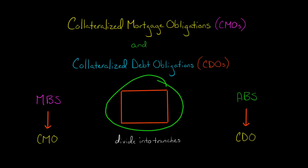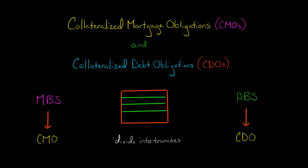Let's say that this box is a mortgage-backed security. You can divide this box into tranches — tranche 1, tranche 2, and so on. Each tranche has a different level of risk. Investors who want the least risk could invest in the top tranche, which has the highest repayment priority. When an investor invests in this, they get their cash flows before the investors in the bottom tranche, who have the lowest priority when it comes to getting their cash flows.